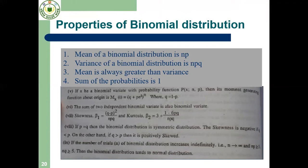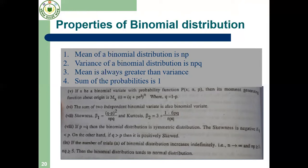Number one: mean of a binomial distribution equals np, and the variance of a binomial distribution equals npq. The mean is always greater than the variance. The sum of p and q is equal to 1. The skewness, that is asymmetry, β₁ = (q - p)² / npq. The kurtosis, β₂ = 3 + (1 - 6pq) / npq. If p equals q, then the binomial distribution is a symmetrical distribution.